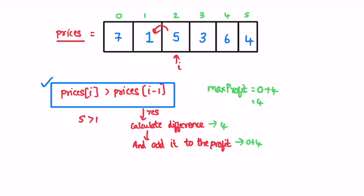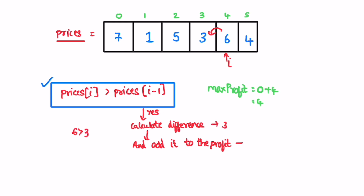Now go to the next iteration — i is pointing at three. Check if three is greater than five. No, it's not, so go to the next iteration. Now i is pointing at six. Check if six is greater than three. Yes, six is greater than three, so we calculate the difference — difference is three — and add it to the current profit: four plus three is equal to seven. Go to the next iteration, and now i is pointing at four. Check if four is greater than six. No, so we ignore it and go to the next iteration. We reach the end of the array, and whatever is present inside the max profit variable, which is seven, is returned as output.